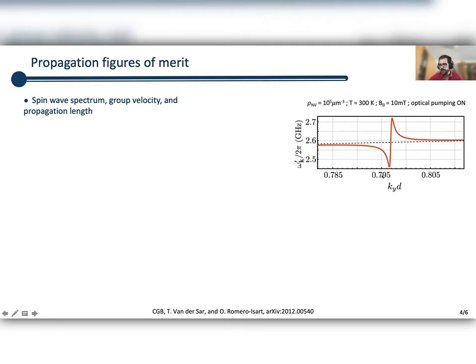Here I'm showing you the dispersion relation of the spin waves propagating along perpendicularly to the field, so this is the Damon-Eshbach kind of spin waves. This is ω in gigahertz versus wave vector in units of the thickness of the film. Notice I'm showing a very narrow range of wave vectors, and this is because only the spin waves within a very narrow frequency range close to resonance with the two-level systems will suffer an appreciable modification. So I'm focusing on this region already, and I'm using these parameters: 5 NV centers per cubic micron, room temperature, and applied magnetic field of 10 millitesla, and I'm applying optical pumping to the NV centers so you can assume these NV centers are in their ground state.